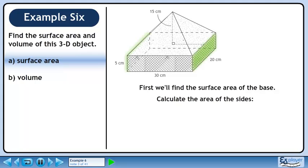Calculate the area of the sides. The area of a rectangle is length times width. The rectangle has dimensions of 20 cm by 5 cm. The area is 100 cm².